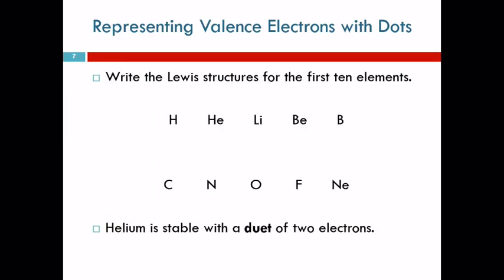So let's look at the first ten elements in the periodic table and write Lewis structures for them. We need to know the number of valence electrons. How many valence electrons does hydrogen have? One. It should be easy—hydrogen only has one electron. How about helium? Two. It's tempting to say it has eight because it's in group eight, but it only has two electrons.